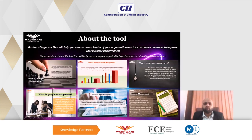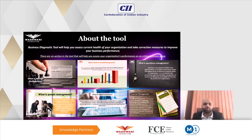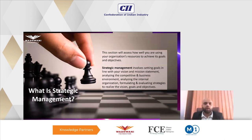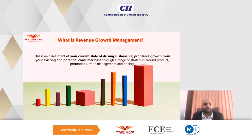This tool has six different sections. The first is strategic management — understanding how good you are at managing strategy, including vision and mission. Second is revenue management, looking at your current state of driving sustainable, profitable growth from your existing and potential customer base. Third is operations — how well you translate resources into profit.